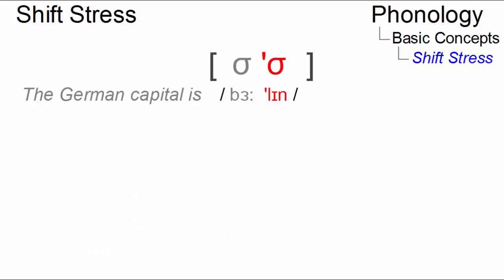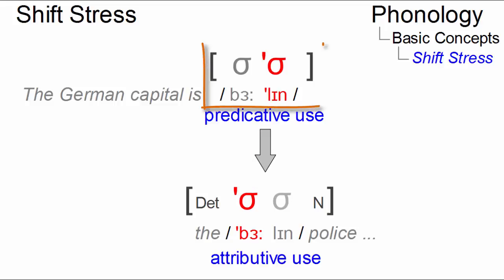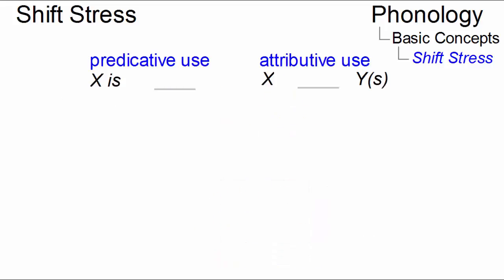In other words, when polysyllabic items do not occur in isolation, as in Berlin, or in predicative positions such as the German capital is Berlin, but form part of a larger construction, as in the Berlin police, they switch the primary stress, leaving the syllable that originally carried the primary stress unstressed. As a guideline, when these items are used predicatively, the second syllable is stressed. When they are used as attributes, stress shifts to the initial syllable.